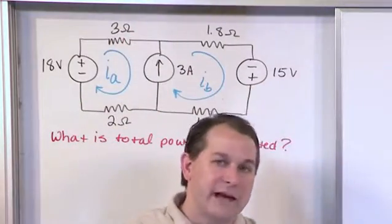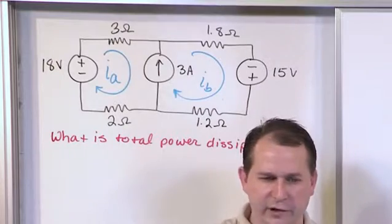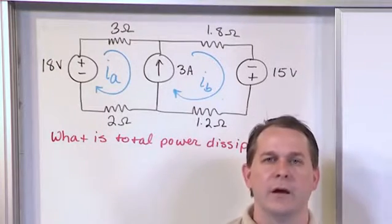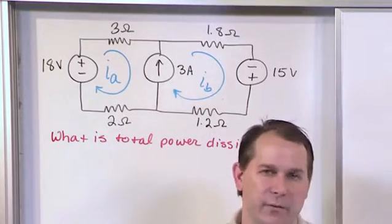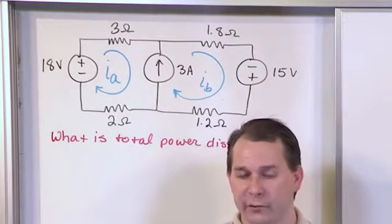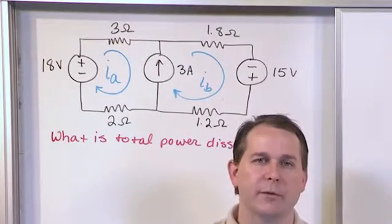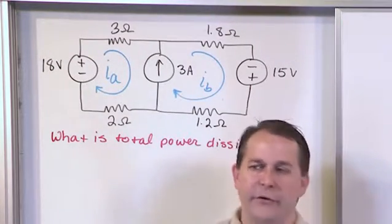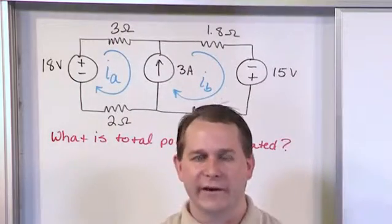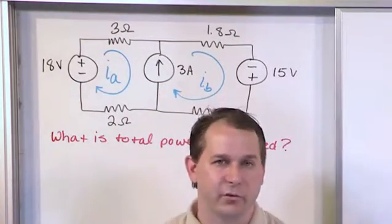Now if you remember in the last problem we had a similar situation. We tried to do the loop, we couldn't find the voltage across it, but there was an easy way out in that one because that current source in the last problem was on the bottom, on the outside edge of a circuit. So we knew that the mesh current down there was just equal to the current source.